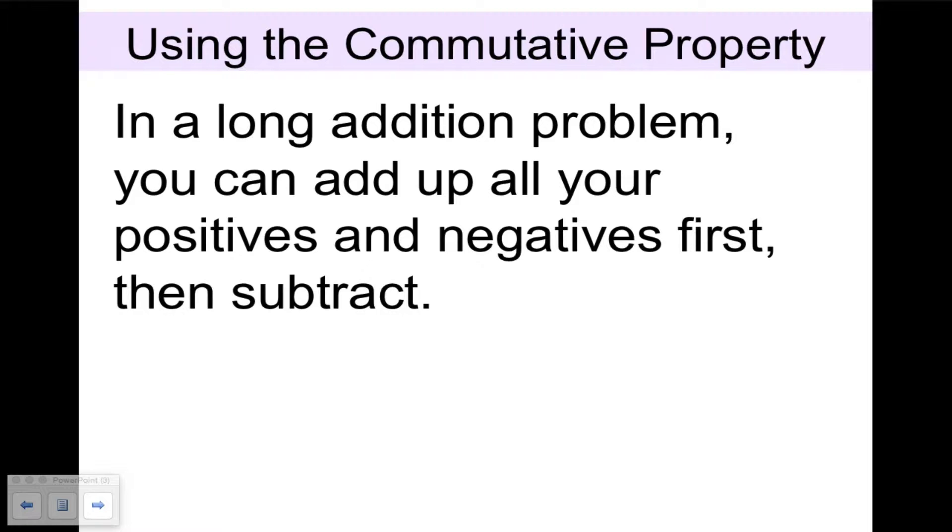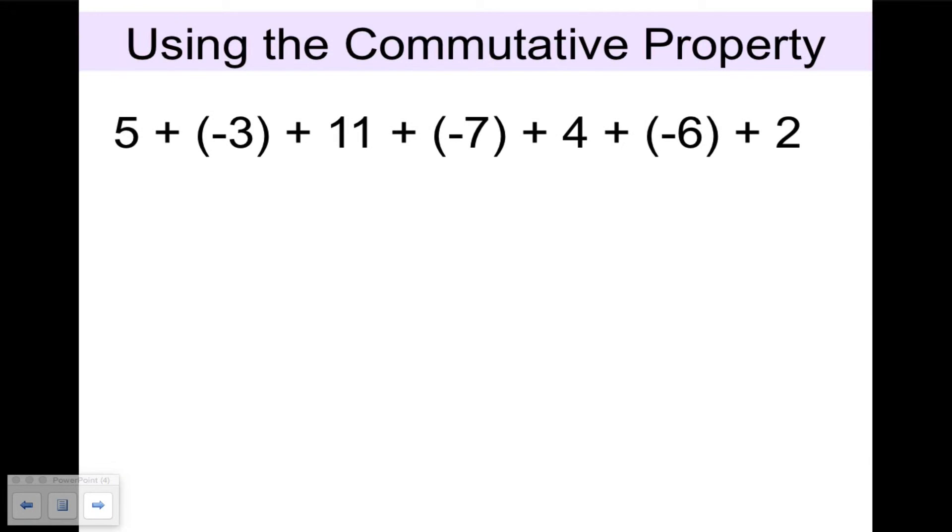Let's take a look at an example: 5 plus negative 3 plus 11 plus negative 7 plus 4 plus negative 6 plus 2. While it's true that you could follow the order of operations, which tells us to add and subtract from left to right, it's easier if we first use the commutative property to group together the numbers with like signs.